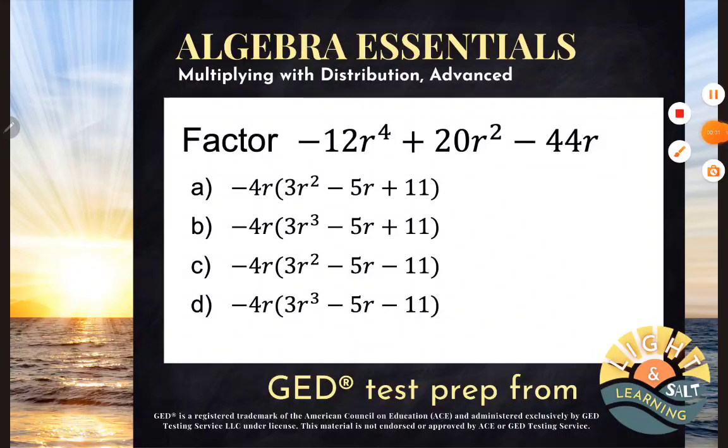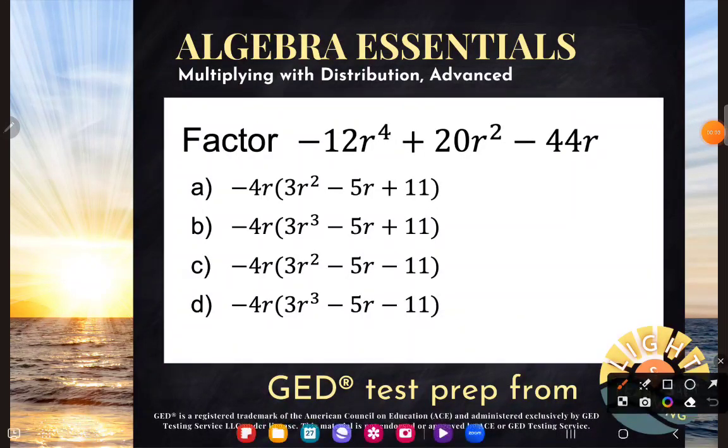Hello algebra students. So we see a problem here that's asking us to factor negative 12r to the fourth power plus 20r squared minus 44r.